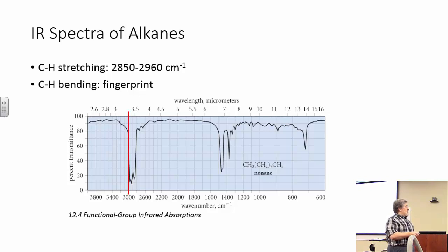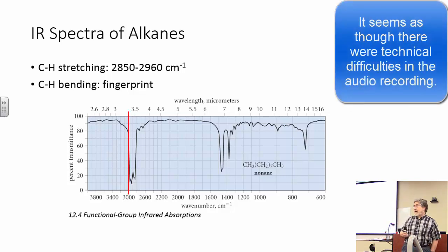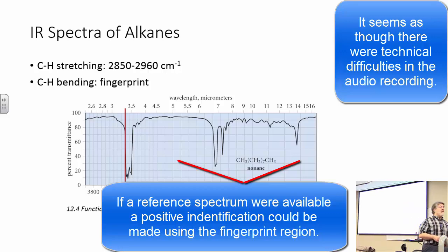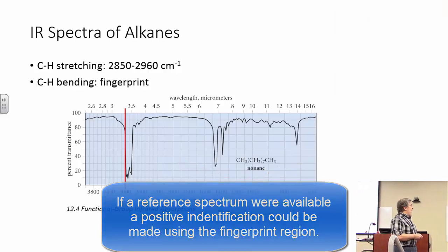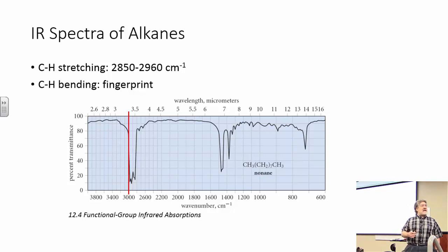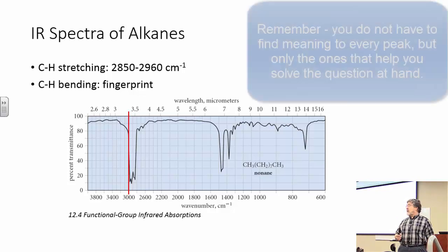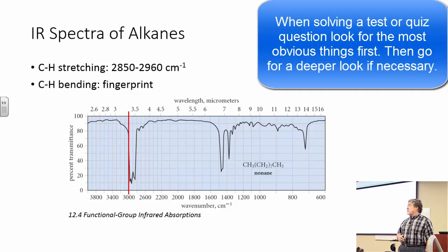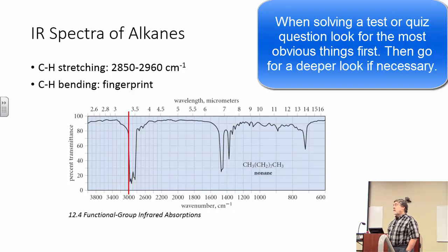Other peaks down here, the fingerprint region, fingerprint really helps you positively identify a particular molecule if you have a reference spectrum. Other than that, I wouldn't spend a lot of time trying to find meaning here. This is first glance information, right? Your first pass at information to try to understand what it is. Look for these peaks first, then you may have to go back for a second glance and look for more detail in other locations.